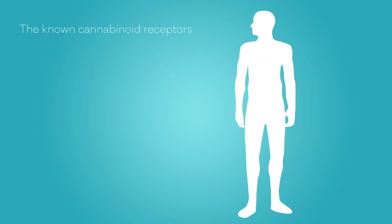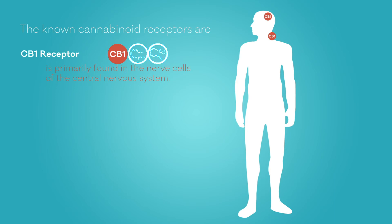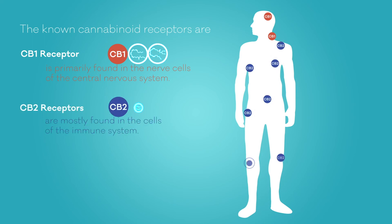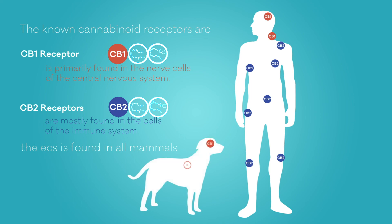The known cannabinoid receptors are the CB1 receptor, which is primarily found in the nerve cells of the central nervous system and is activated by anandamide and 2-AG. CB2 receptors, which are mostly found in the cells of the immune system, are also activated by anandamide and 2-AG. The ECS is found in all mammals and can be modulated by phytocannabinoids to treat a number of conditions.